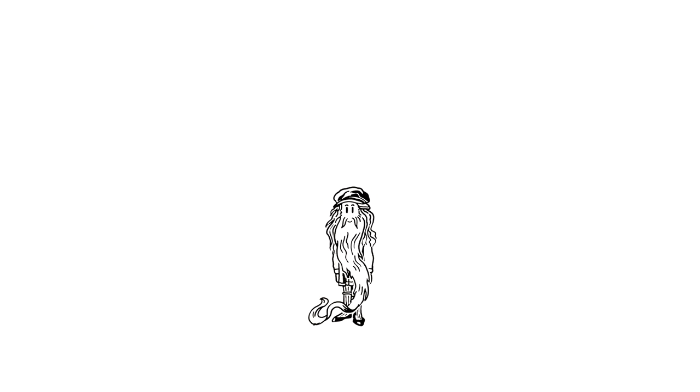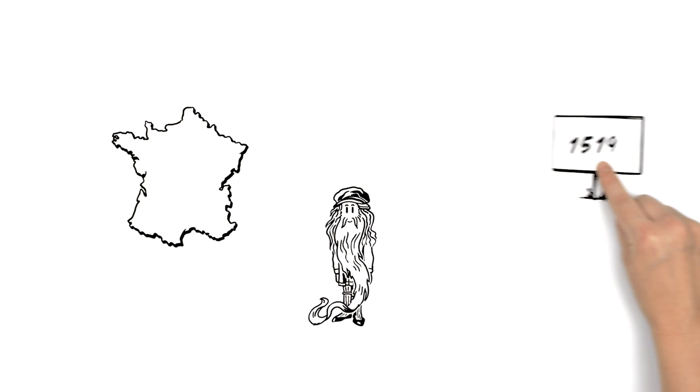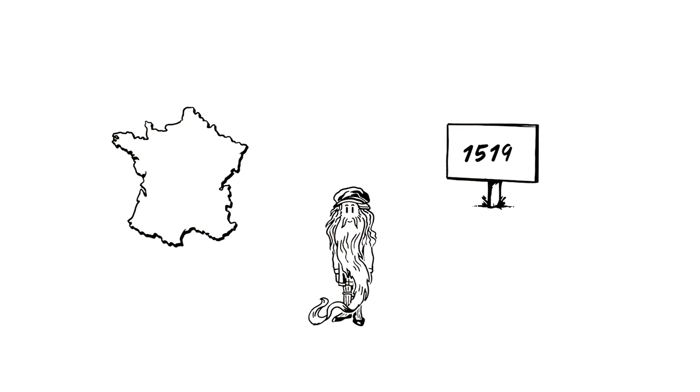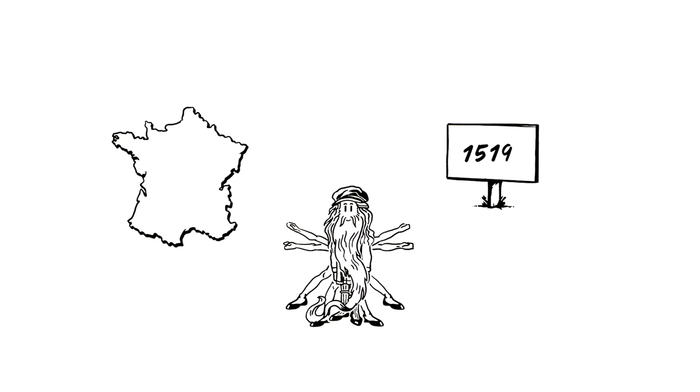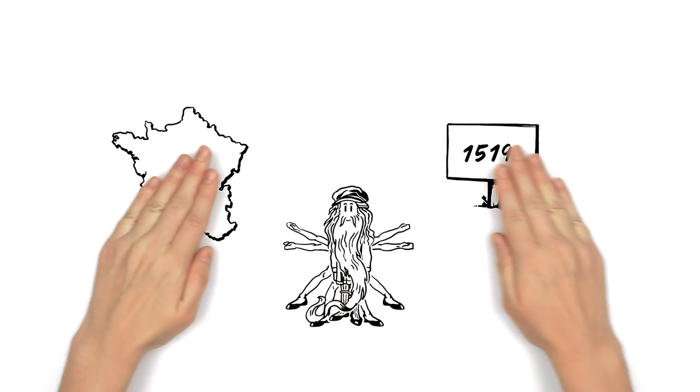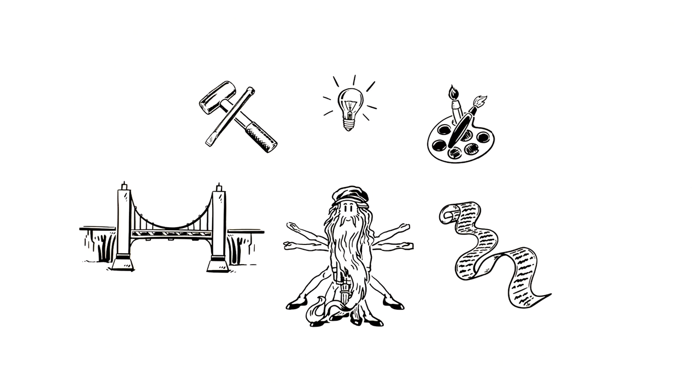He spent his final years in France. By his death in 1519, he had developed a legendary reputation as a Huomo Universale, or Jack of all trades. To this very day, Leonardo da Vinci is widely considered to be one of the most extraordinary people of all time.